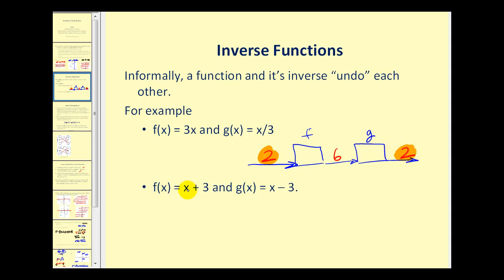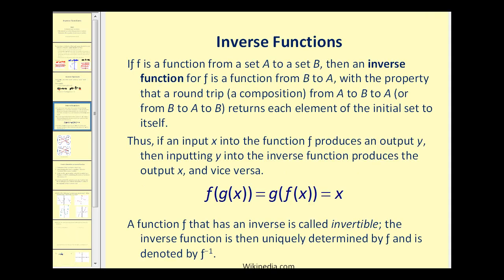Another example would be f of x equals x plus three and g of x equals x minus three. Obviously, plus three and minus three are opposite operations. Therefore, these two functions undo each other and are inverses of one another. Let's take a look at a more formal definition.